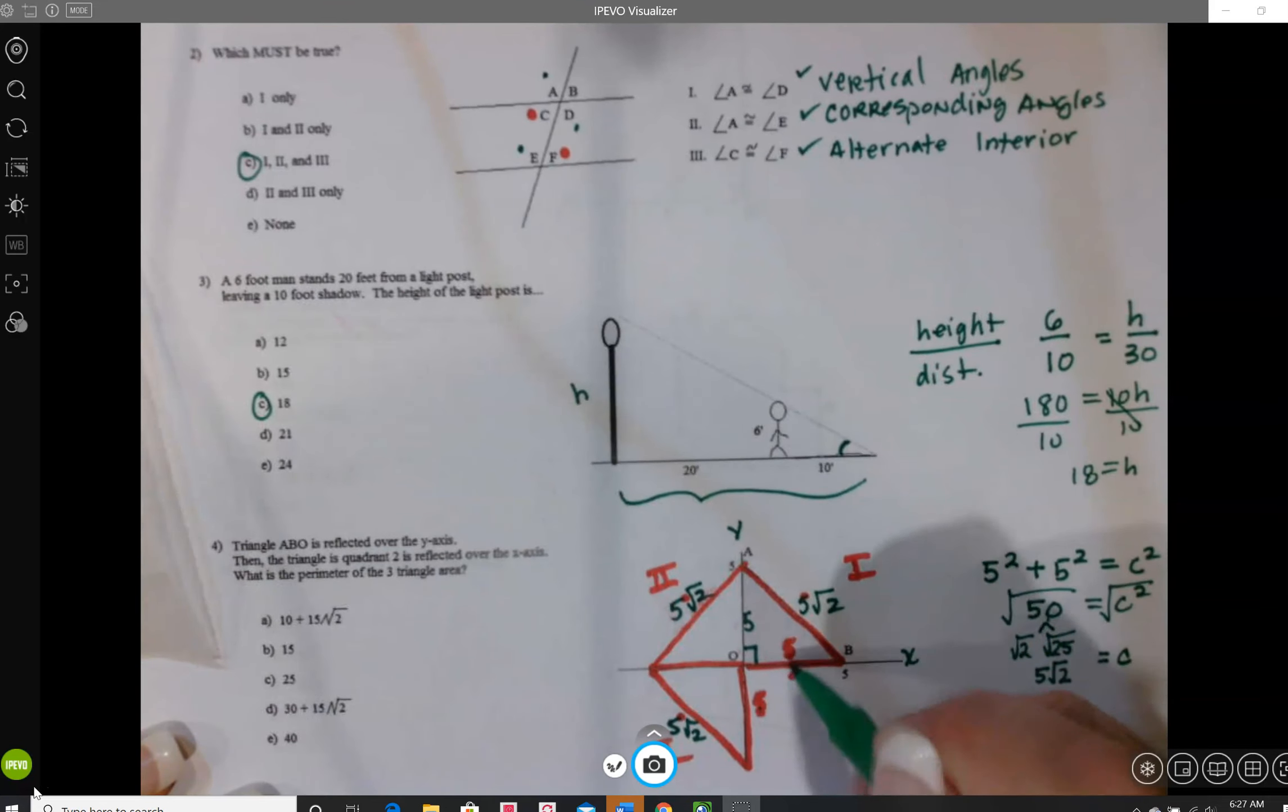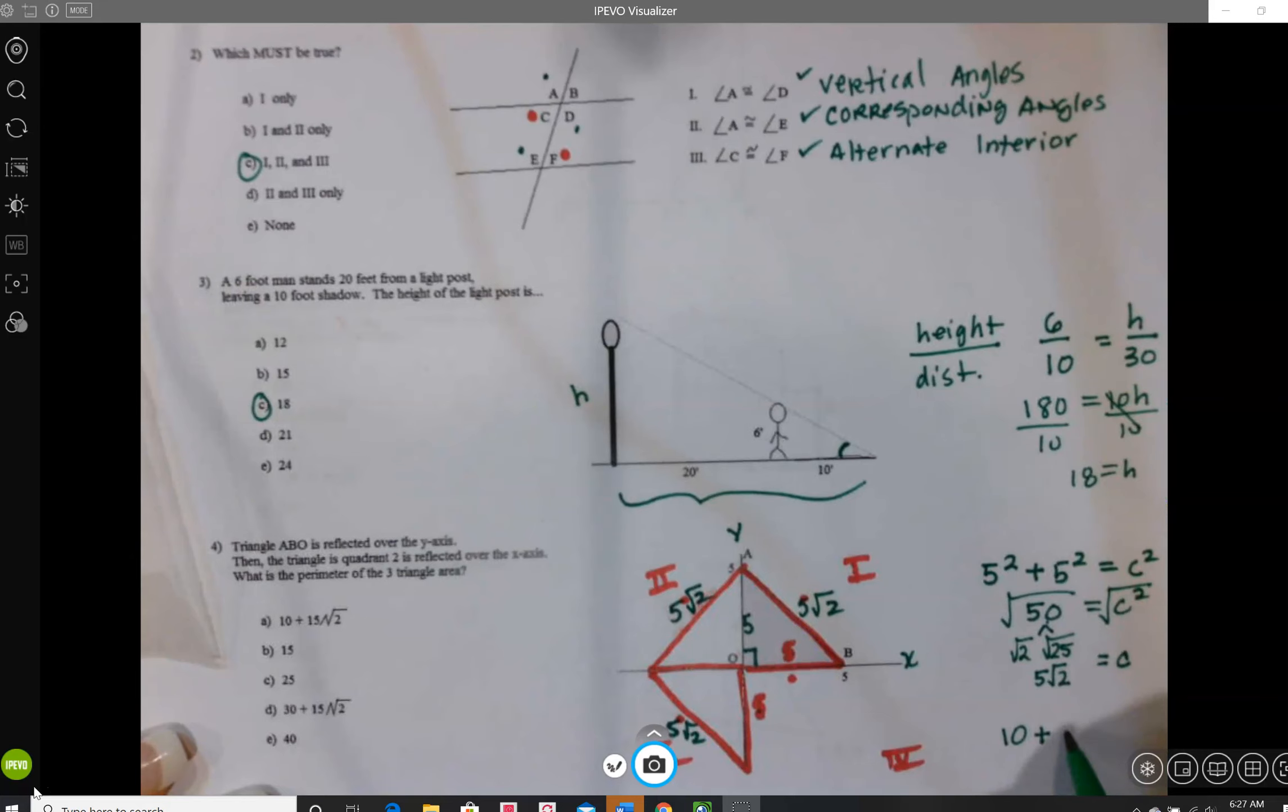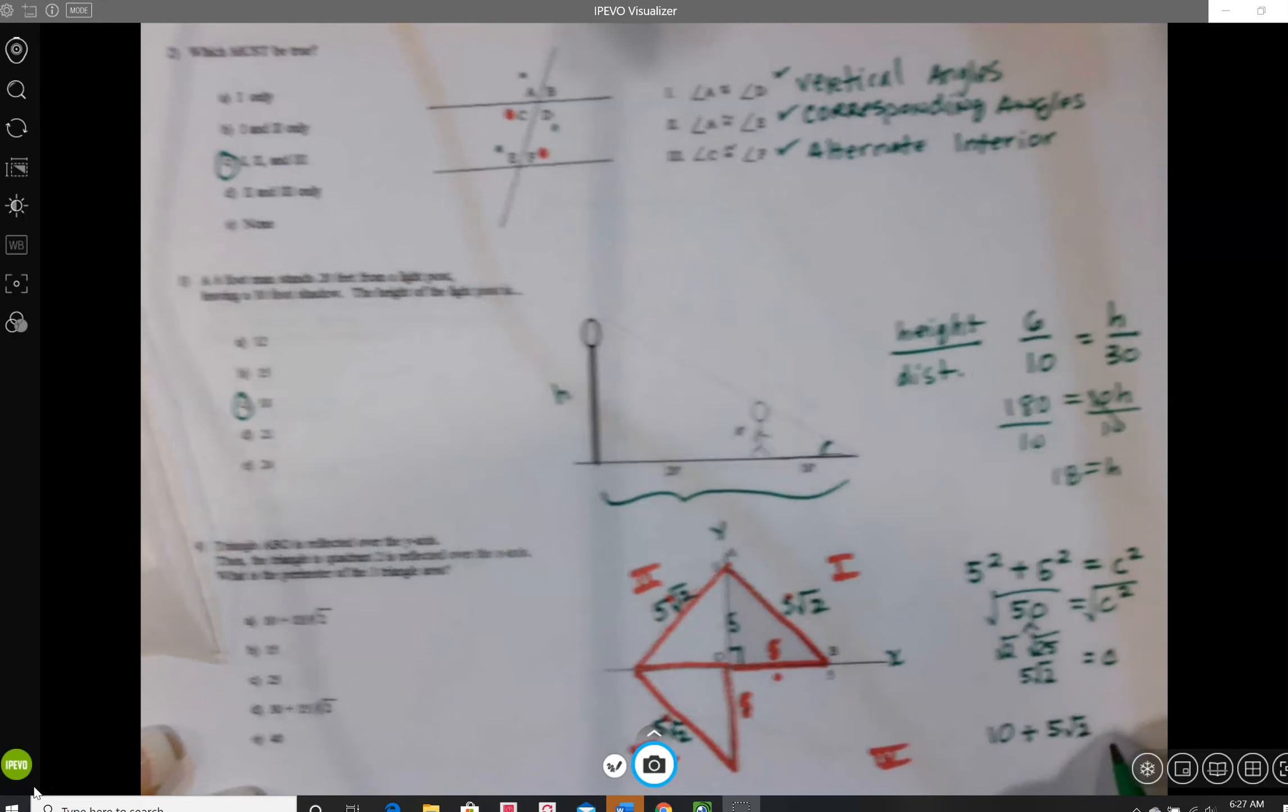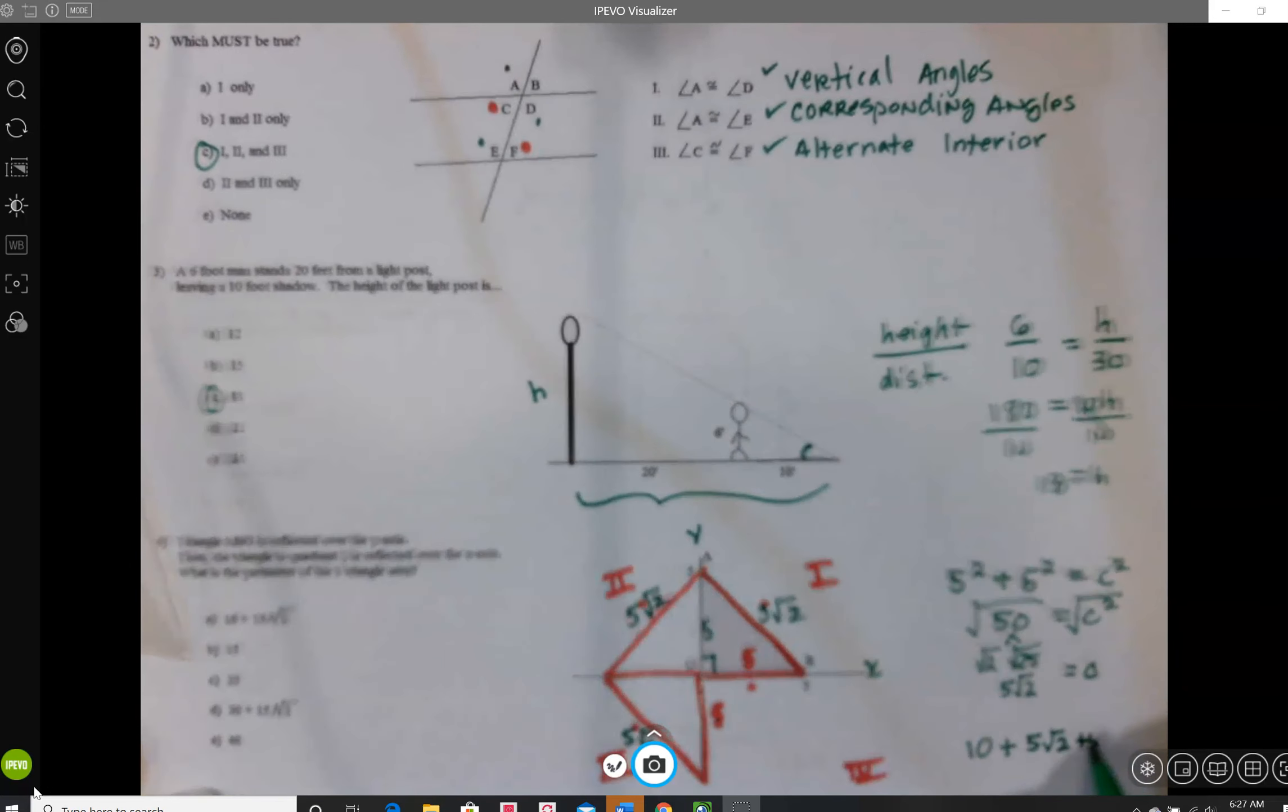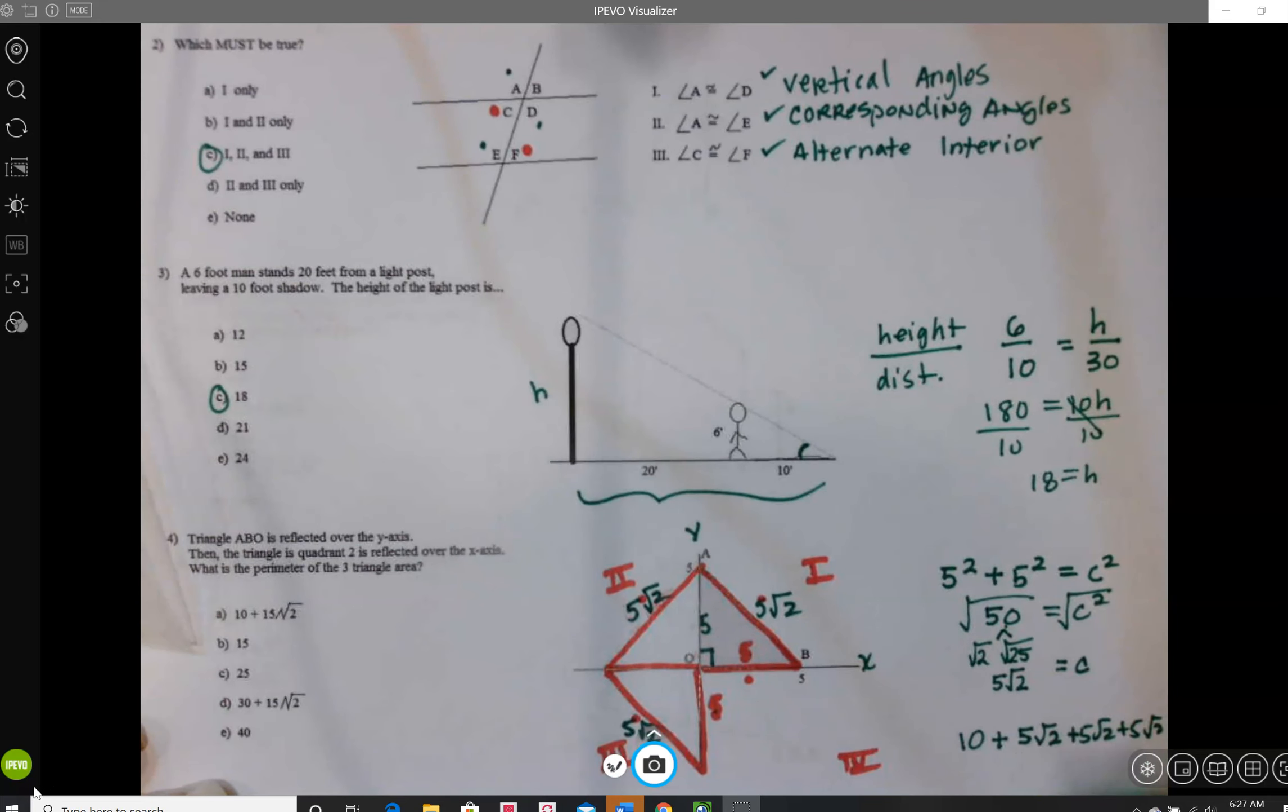So when I add up my perimeter, which is to add all sides, I'm going to go 5 plus 5, that's 10. And then I have 5 radical 2, and I have 3 of those. So I'm going to write it out. But the rule of radicals is that you can add these like the 5 is a coefficient. So I have 5 radical 2, 5 radical 2, 5 radical 2. That's 15 radical 2s altogether. And so that's going to match choice A.